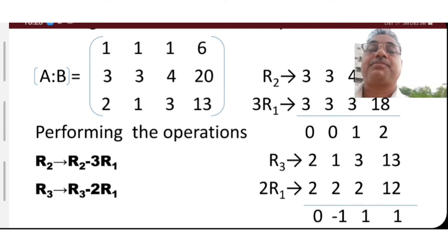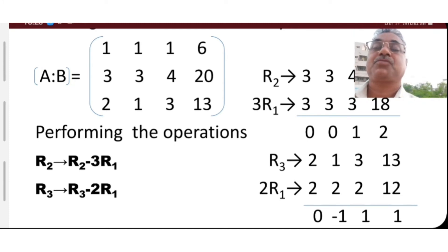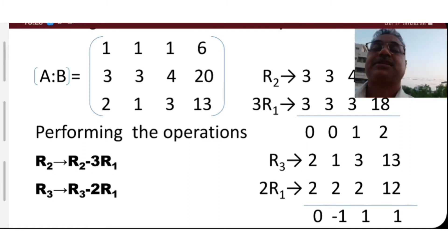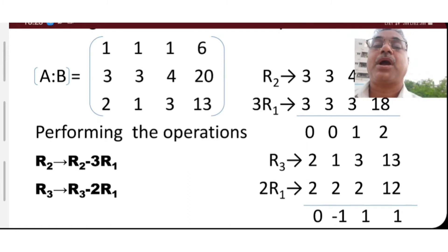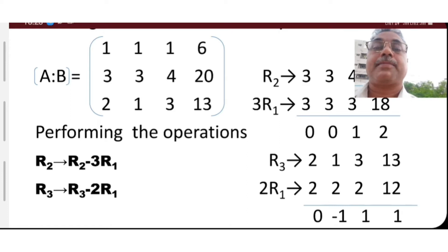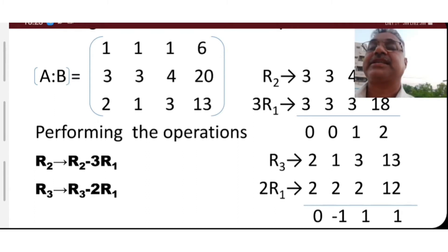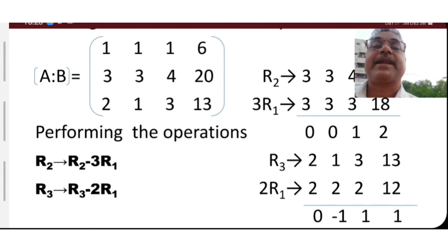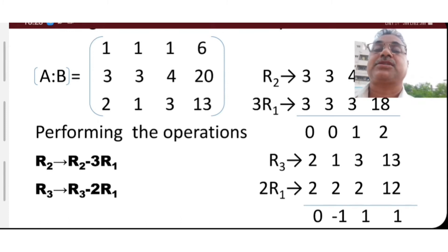Now we have to form the augmented matrix. That means we take matrix A as it is and append matrix b as a column on the right side of A to form the augmented matrix [A|b].